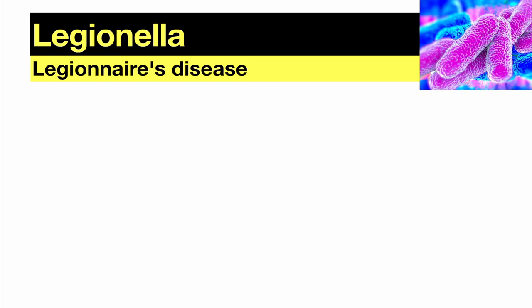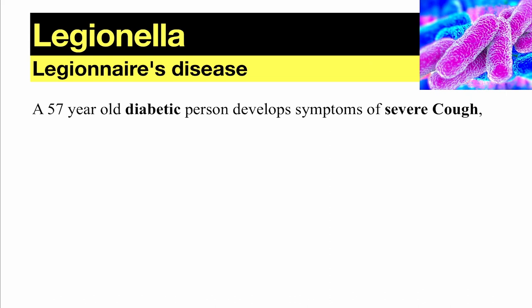The first question is from the 2021-22 paper: a 57-year-old diabetic patient develops symptoms of severe cough. When reading a question, don't jump to conclusions before reading it completely. The primary purpose of this question discussion is to show you how to attempt these questions — not just the theory, but the approach.